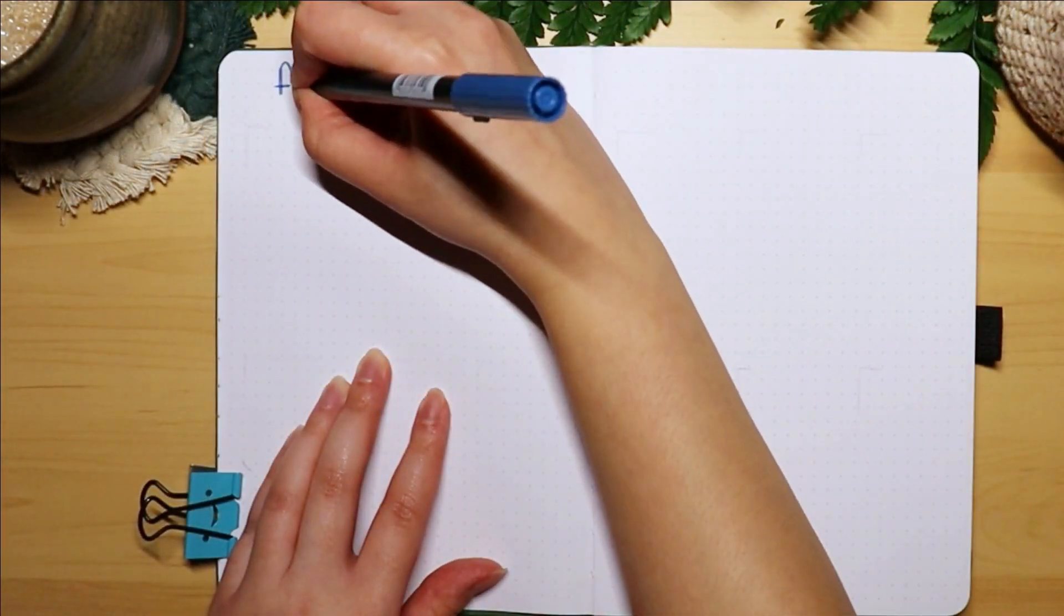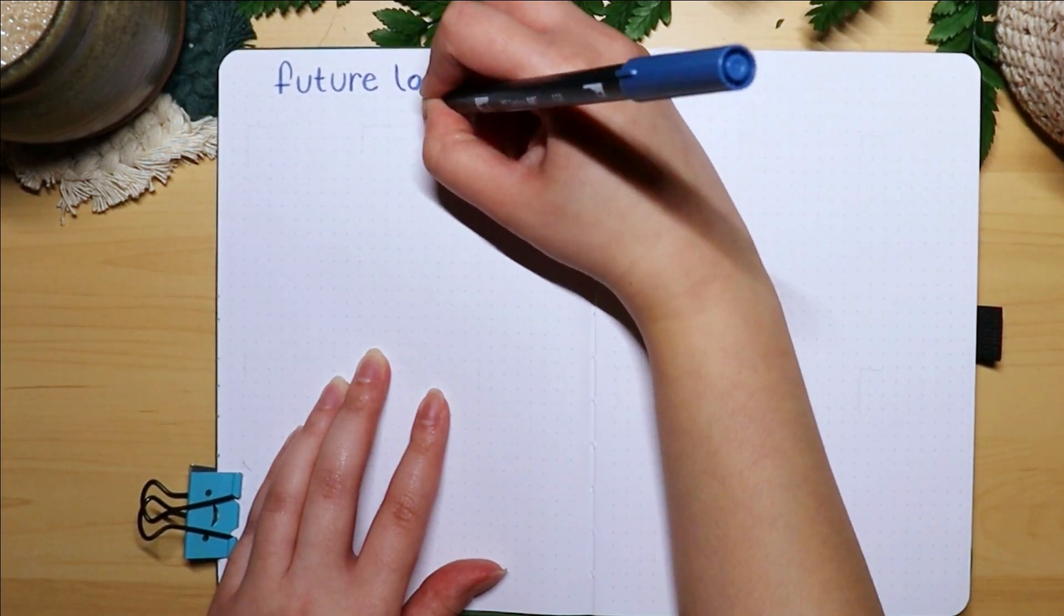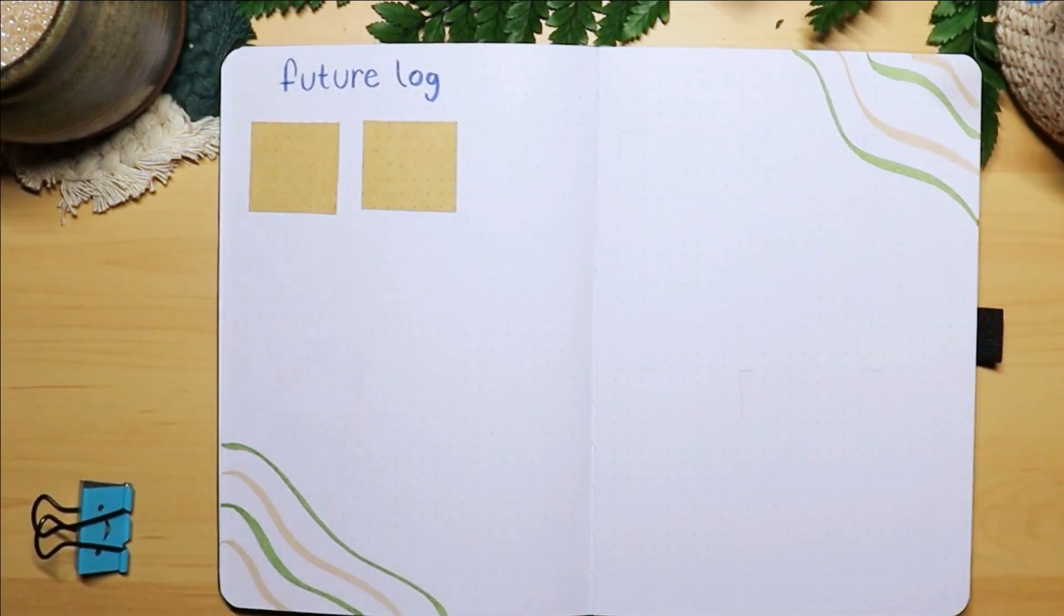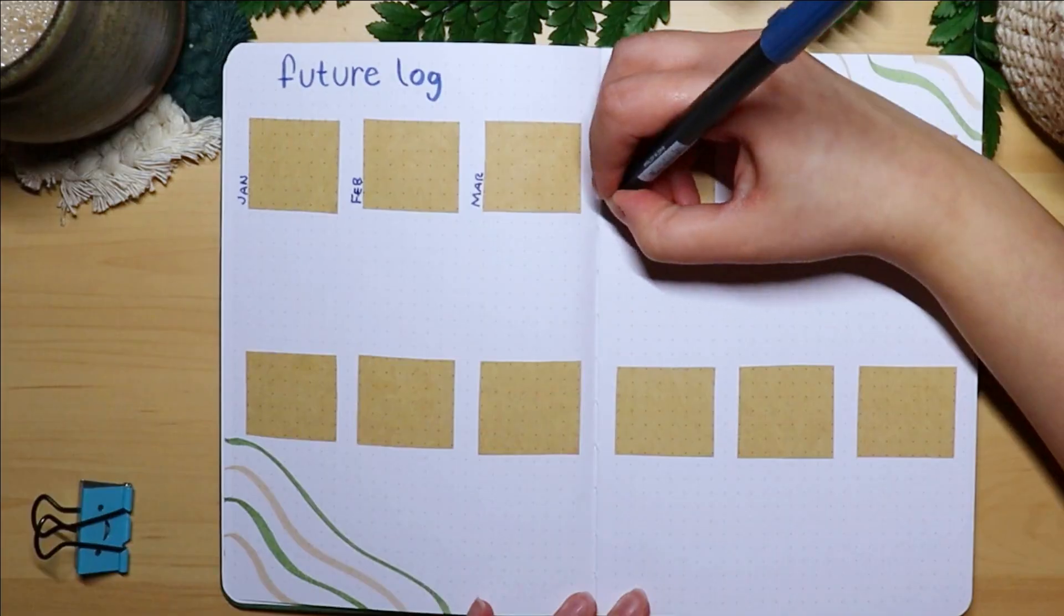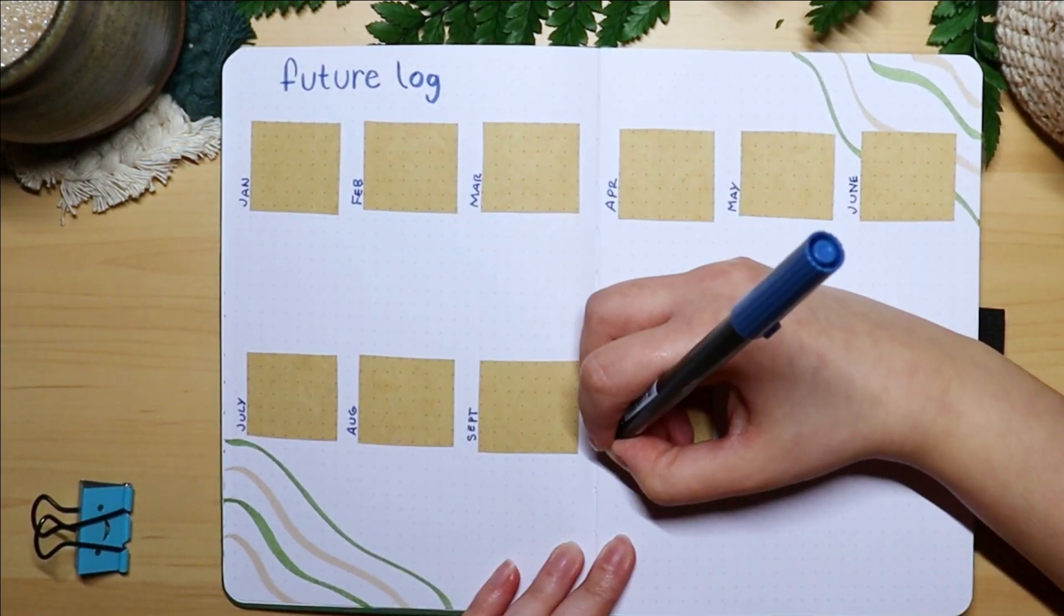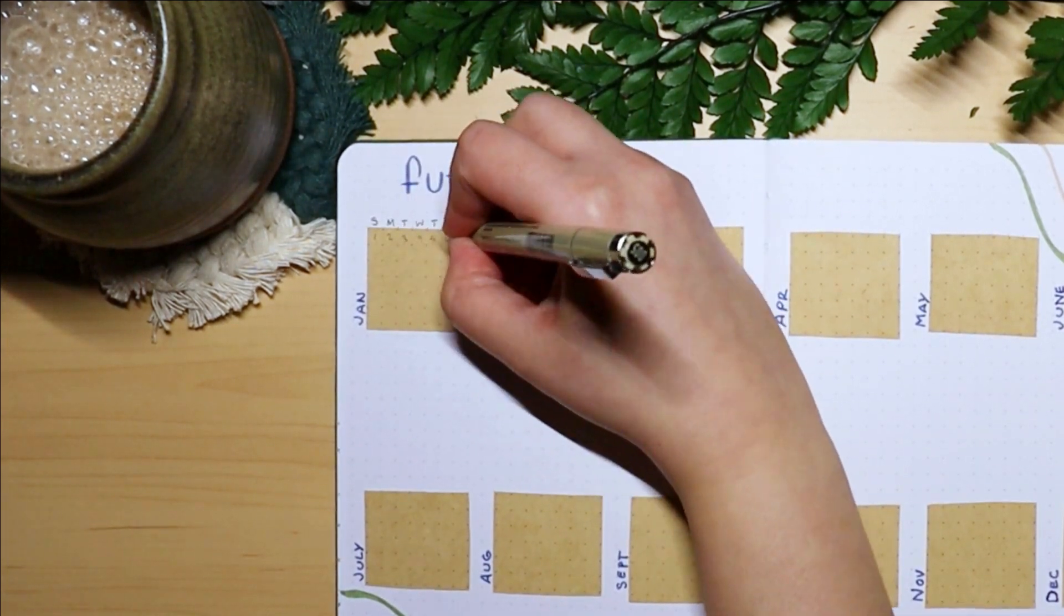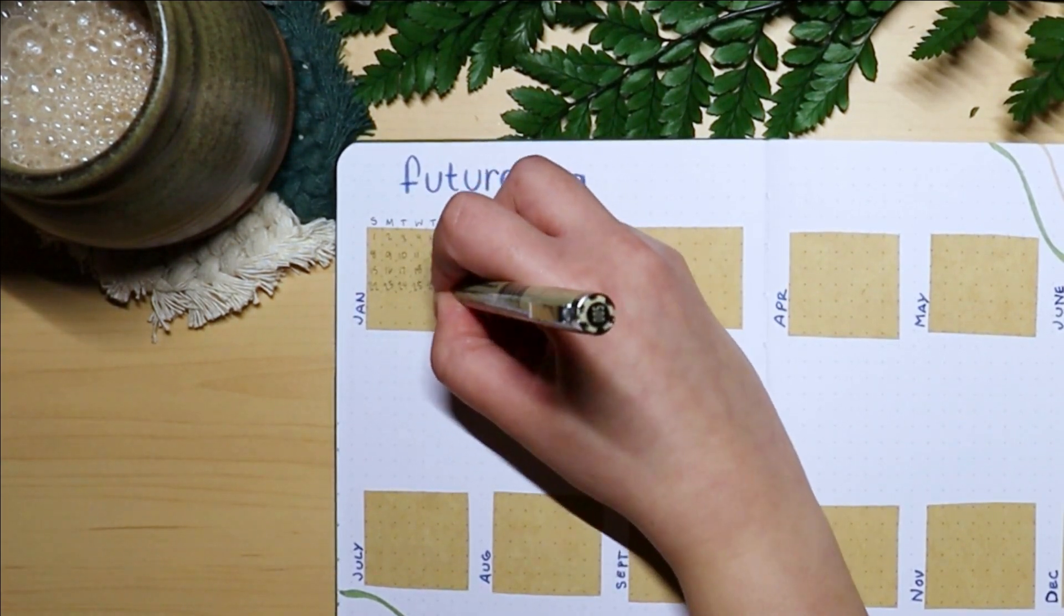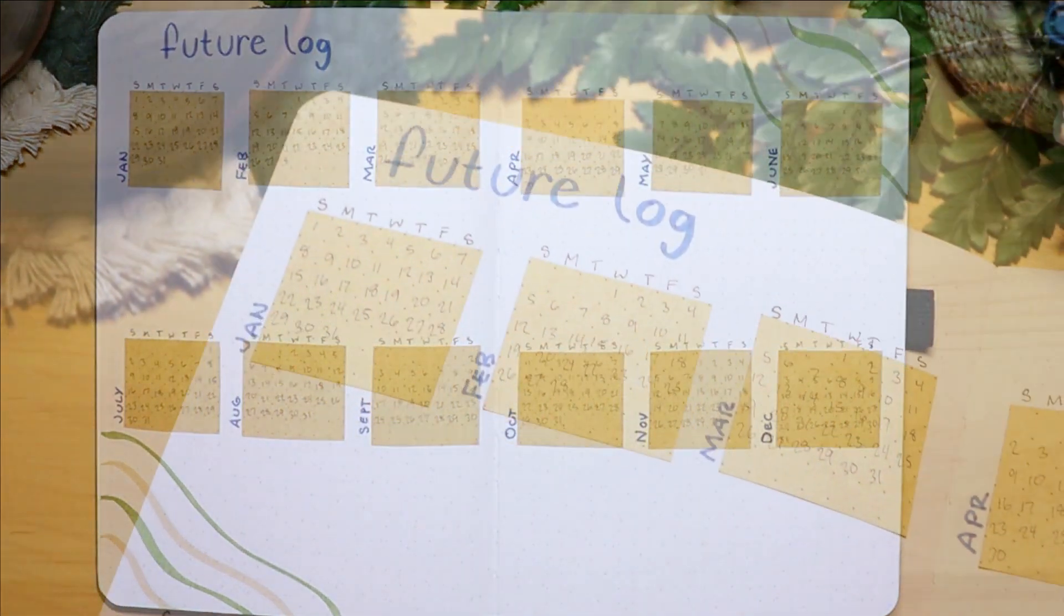My next spread is the future log which is basically a year overview. It's nice to reference back to when I'm making my monthly setups. For the future log I'm using craft paper for each month and I like to leave some room underneath so I can write down important future dates. Writing out each month is so tedious, so I highly suggest stickers if you have some. I know you can find some on Etsy, but just like that the future log is finished.